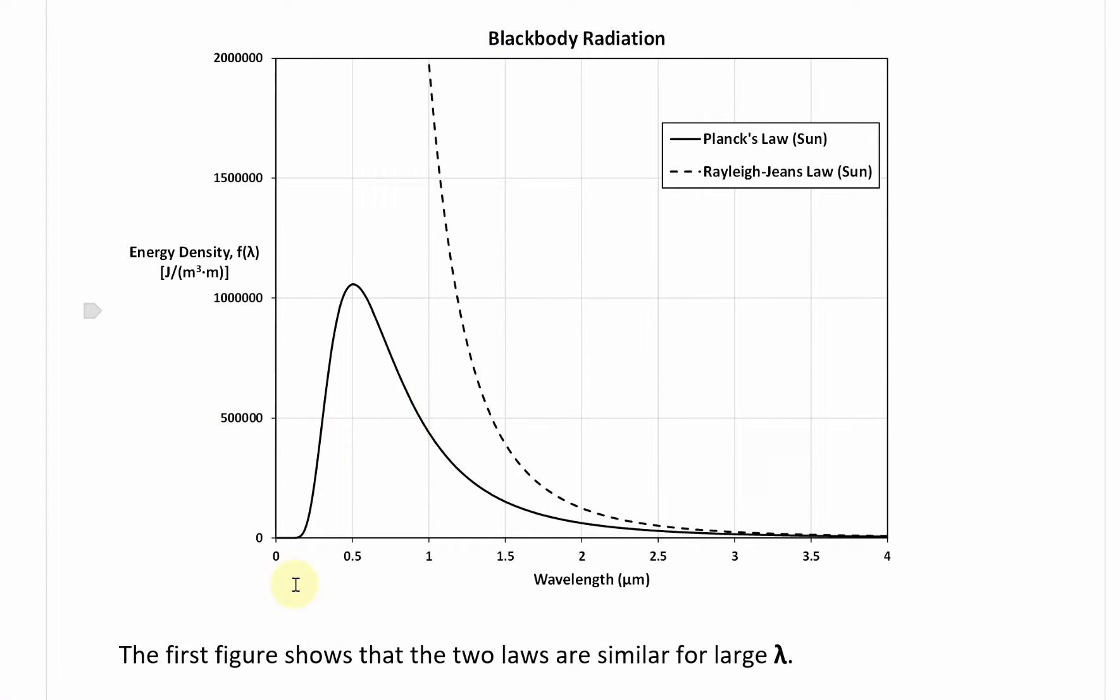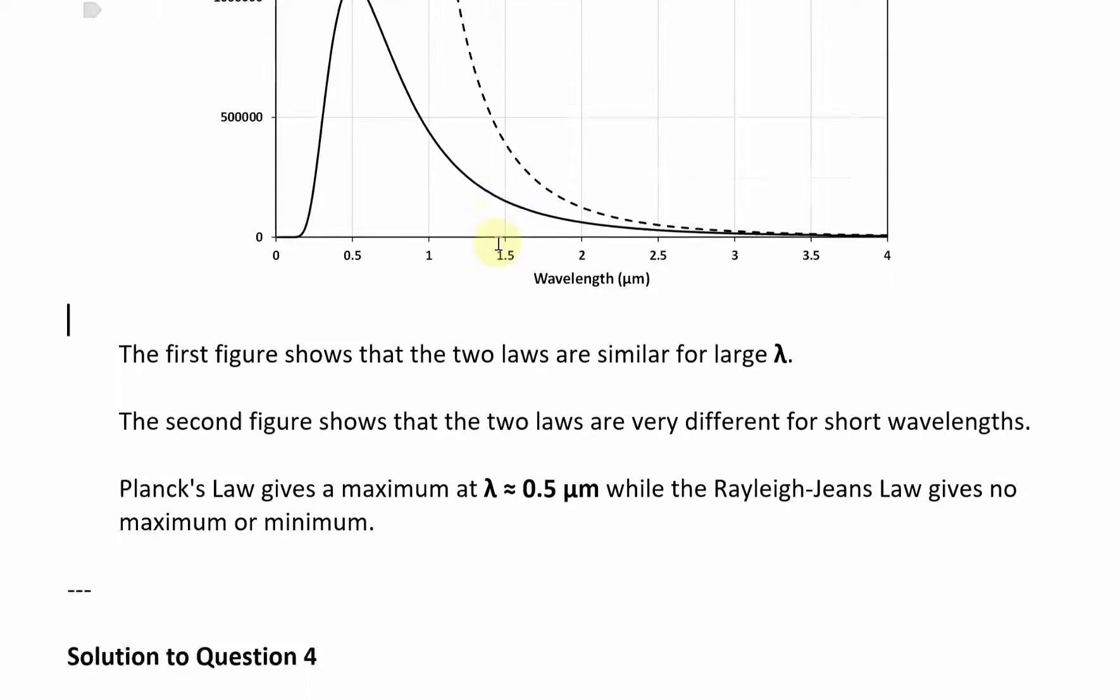The second figure shows that the two laws are very different for short wavelengths. This is again the ultraviolet catastrophe, the UV catastrophe, because the original theory, Rayleigh-Jeans law, was showing it's skyrocketing up, which should mean that hot objects should be showing really high intensity of short wavelengths like UV. But in actuality it dips down, so once you get past this visible range for the sun, it just dips down.